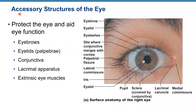First we will talk about accessory structures of the eye. Those structures protect the eye and aid in eye function. Accessory structures include eyebrows, eyelids — another name for eyelids is palpebria — conjunctiva, lacrimal apparatus, and extrinsic eye muscles.